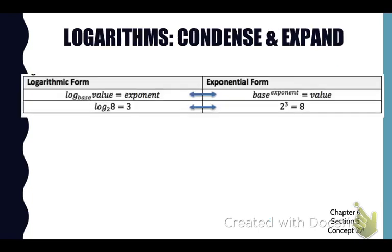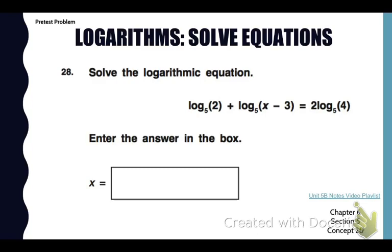Just a review on, well, it says condense and expand, but here I have the information on how to rewrite a logarithm. But look at number 28 now in your pre-test packet. So we're going to look at condensing the left side of this equation. Notice we have two logarithms based 5 that have been expanded with addition. So I can condense those by multiplying the values together. So I get log base 5 of 2 times x minus 3. On the right side, I'm going to expand that multiplication by rewriting that as a power. So 4 squared is 16.